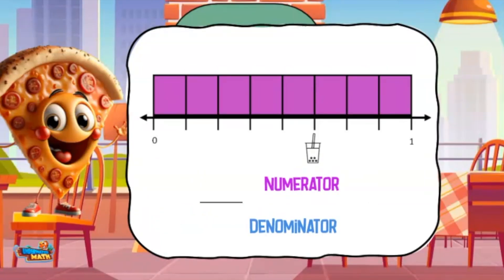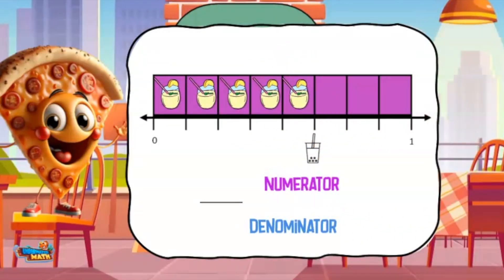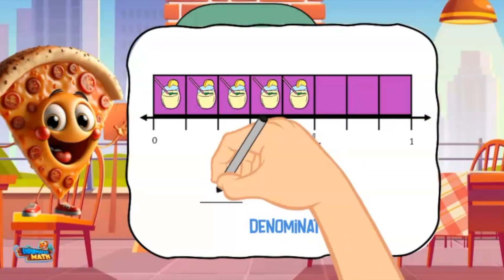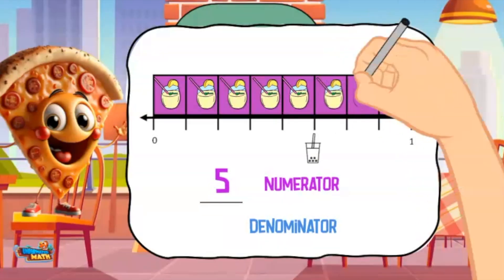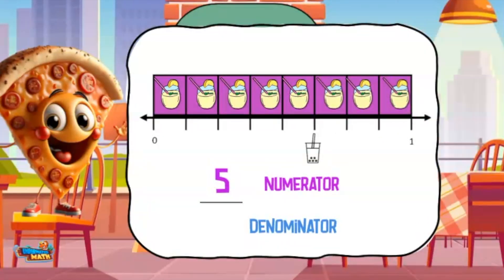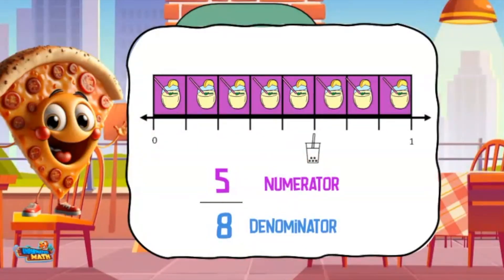Fractions can also be represented on number lines. On this number line I am looking to find the location of the drink. Starting with the numerator, count how many spaces the drink is from zero — there are five, so the numerator is five. Now to find the denominator: this is the number of equal parts it takes to make the whole. There are eight total parts, so the denominator is eight. The drink is located at five eighths.